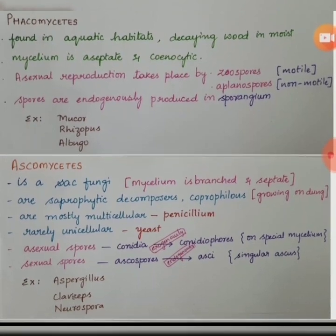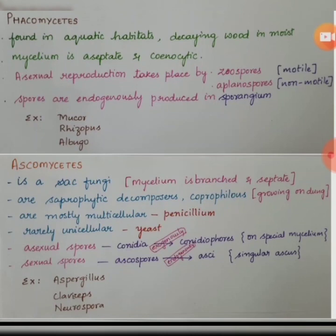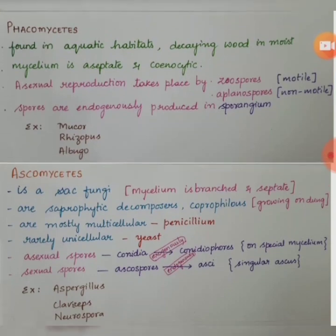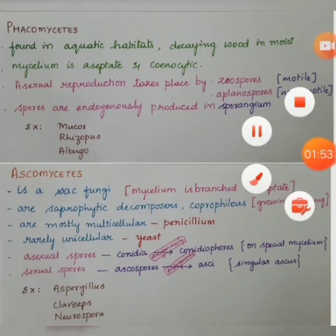Examples for ascomycetes include Aspergillus, Claviceps and Neurospora. The starting four letters of both 'Aspergillus' and 'ascomycetes' are the same — that is a small trick to help you remember.